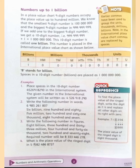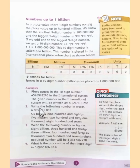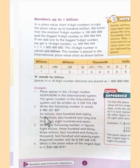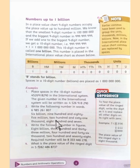After hundred thousand, the space comes for million, ten million, hundred million. After hundred million, the space comes for billion. Next example number two: write the following number in words. 6,985,261,807 is six billion nine hundred and eighty-five million two hundred and sixty-one thousand eight hundred and seven.